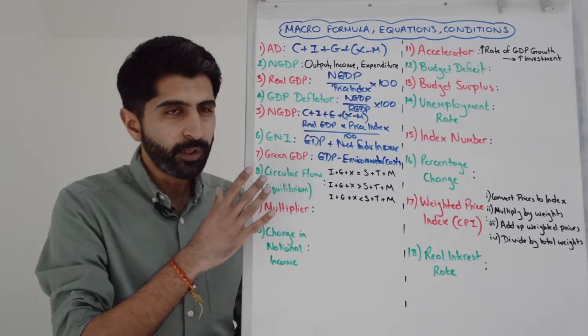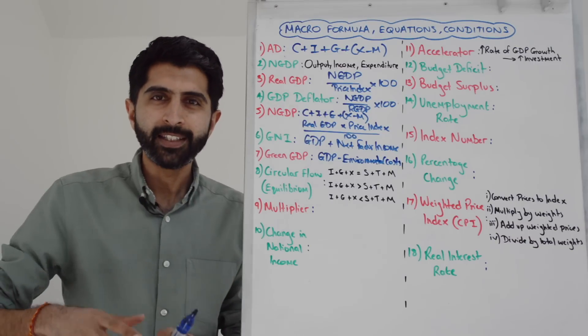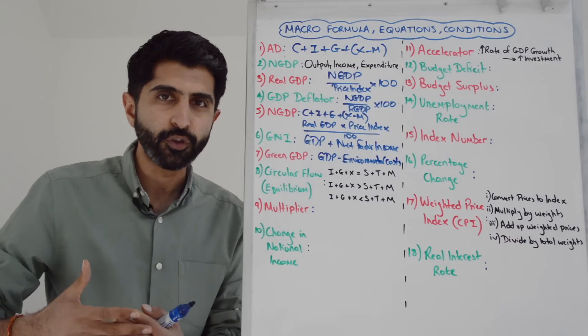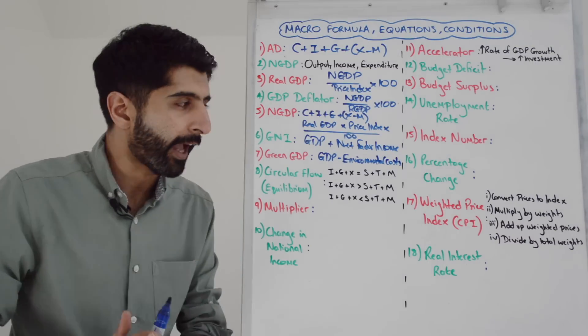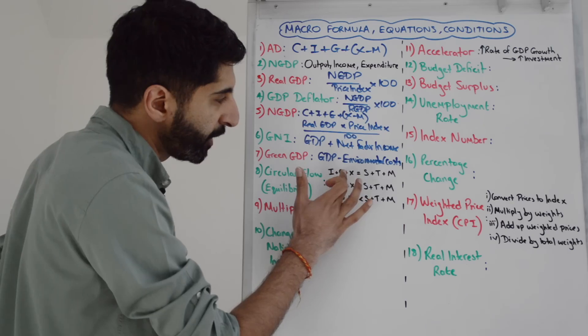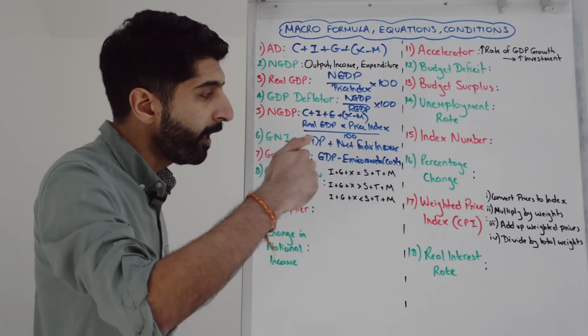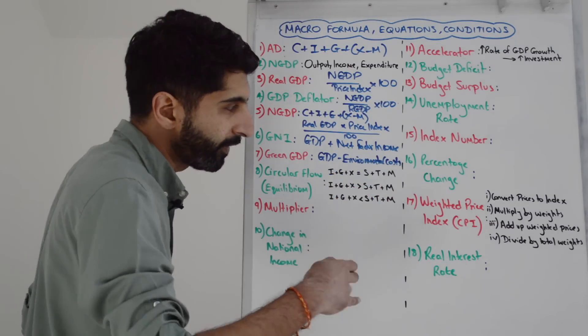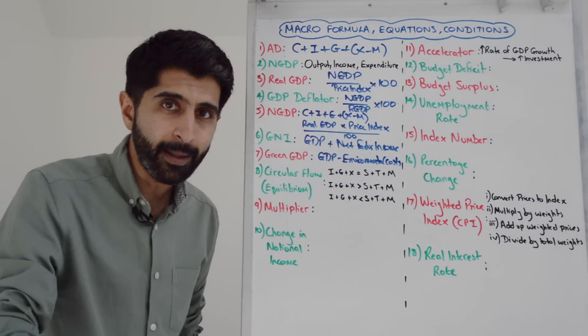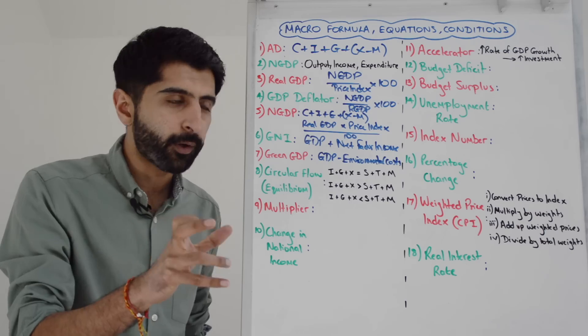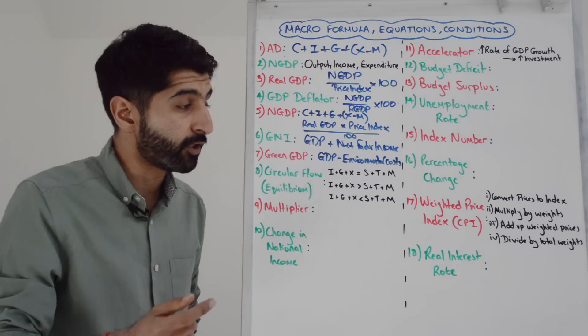If you need to use the circular flow to illustrate macro equilibrium, you compare injections and leakages. If injections are equal to leakages - I plus G plus X equals S plus T plus M - that is macro equilibrium. Injections are equal to leakages.